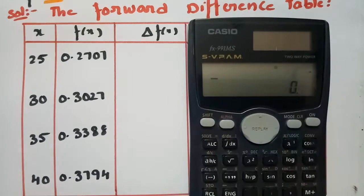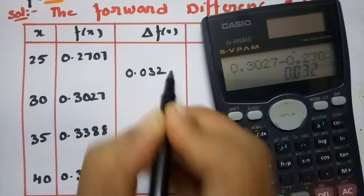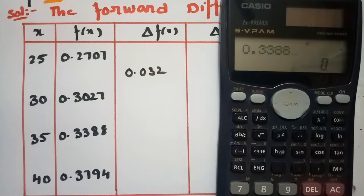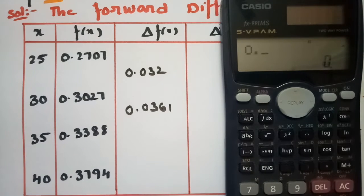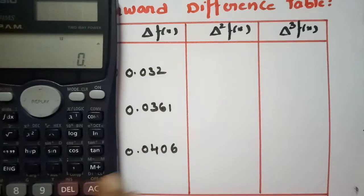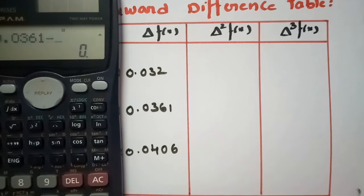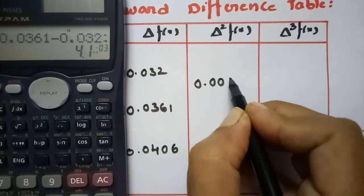Now I have to frame the forward difference table. First, I subtract the upper value minus the lower one. So 0.3027 minus 0.2707 gives 0.0320. Then 0.3388 minus 0.3027 gives 0.0361. And 0.3794 minus 0.3388 gives 0.0406. In the second differences: 0.0361 minus 0.0320 gives 0.0041, and 0.0406 minus 0.0361 gives 0.0045. In the third difference position we write 0.0045 minus 0.0041, giving 0.0004.